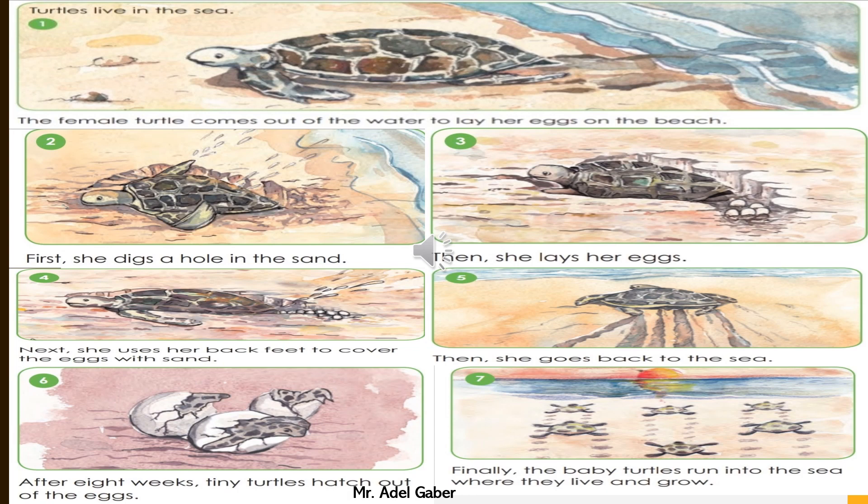Turtles live in the sea. The female turtle comes out of the water to lay her eggs on the beach. First, she digs a hole in the sand. Then she lays her eggs. Next, she uses her back feet to cover the eggs with sand. Then she goes back to the sea. After eight weeks, tiny turtles hatch out of the eggs. Finally, the baby turtles run into the sea where they live and grow.